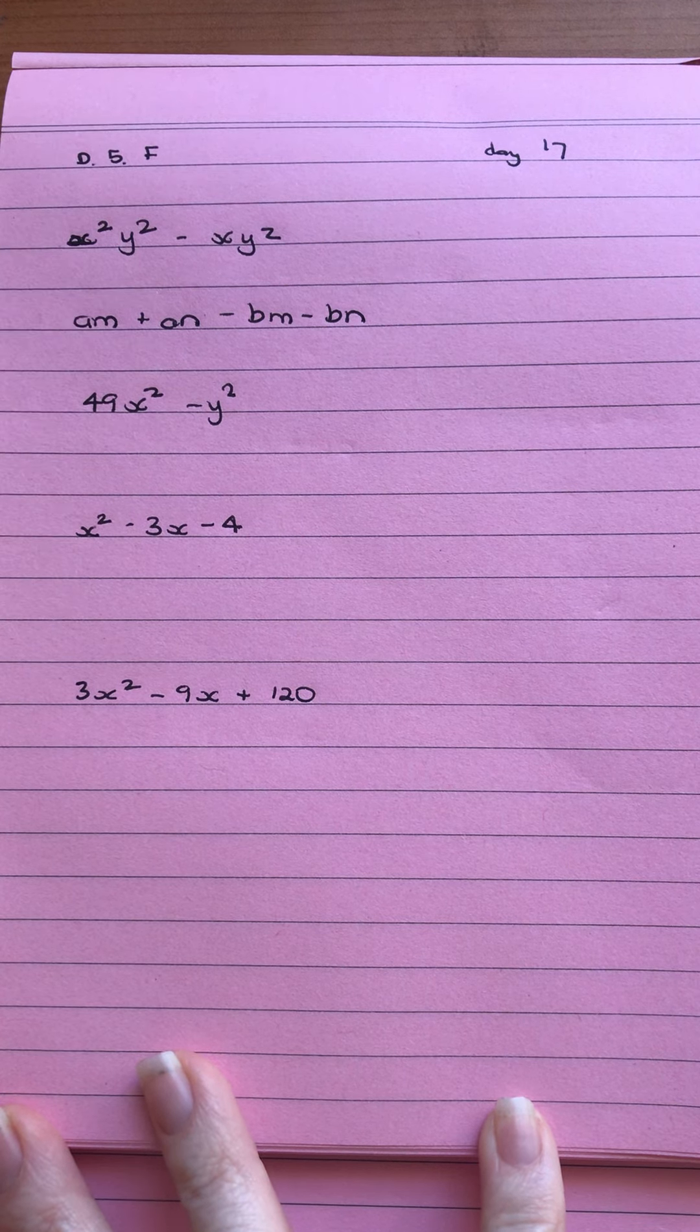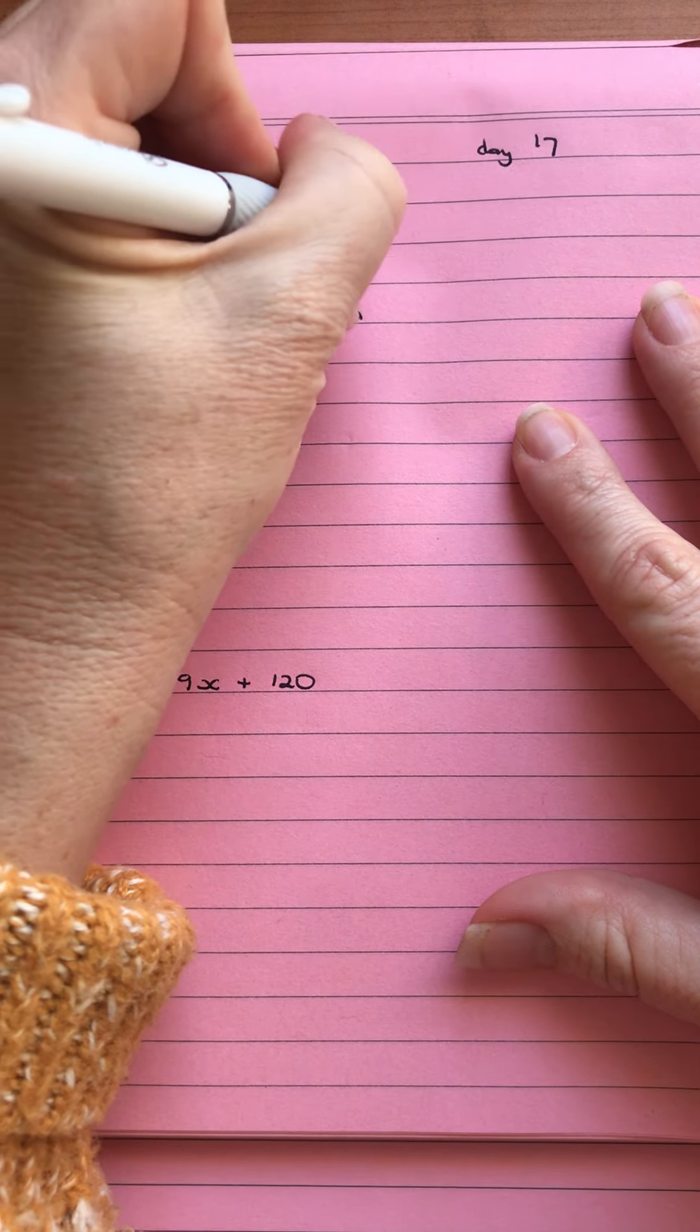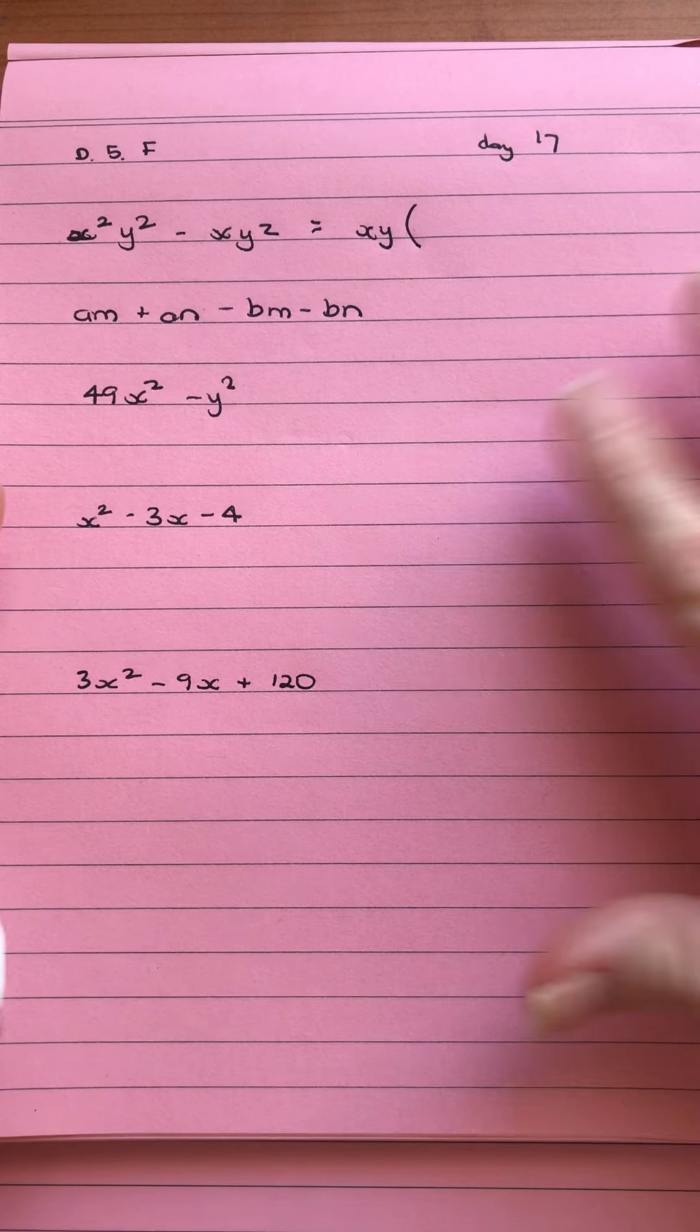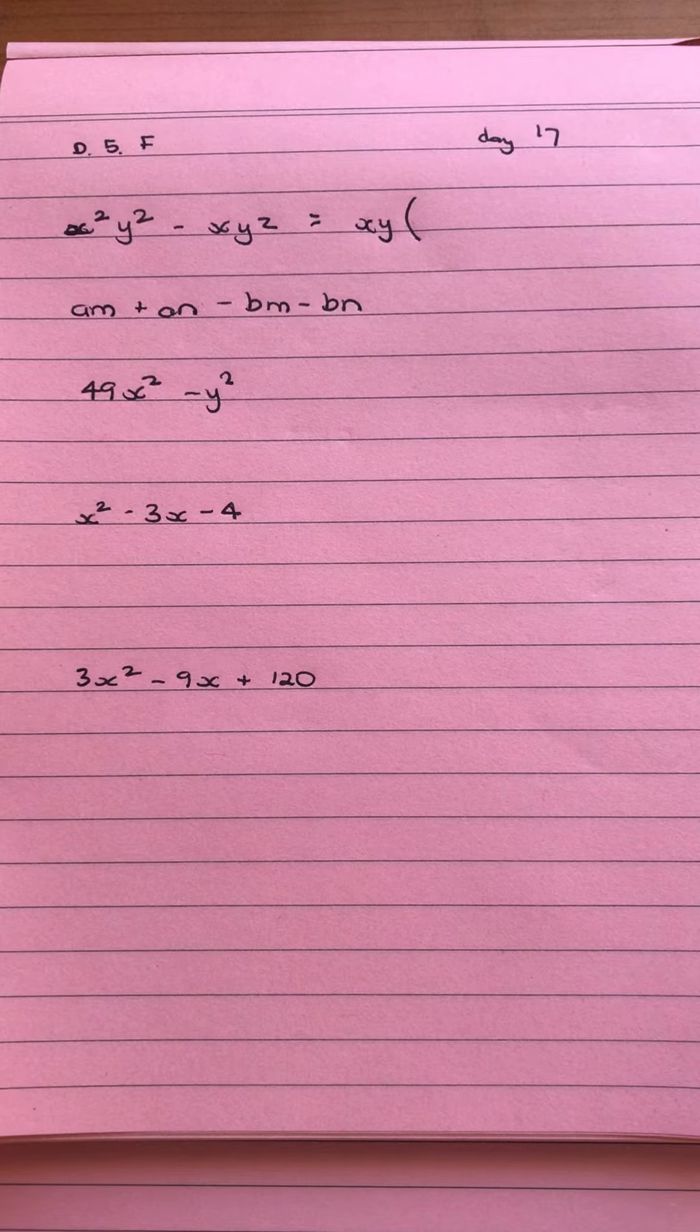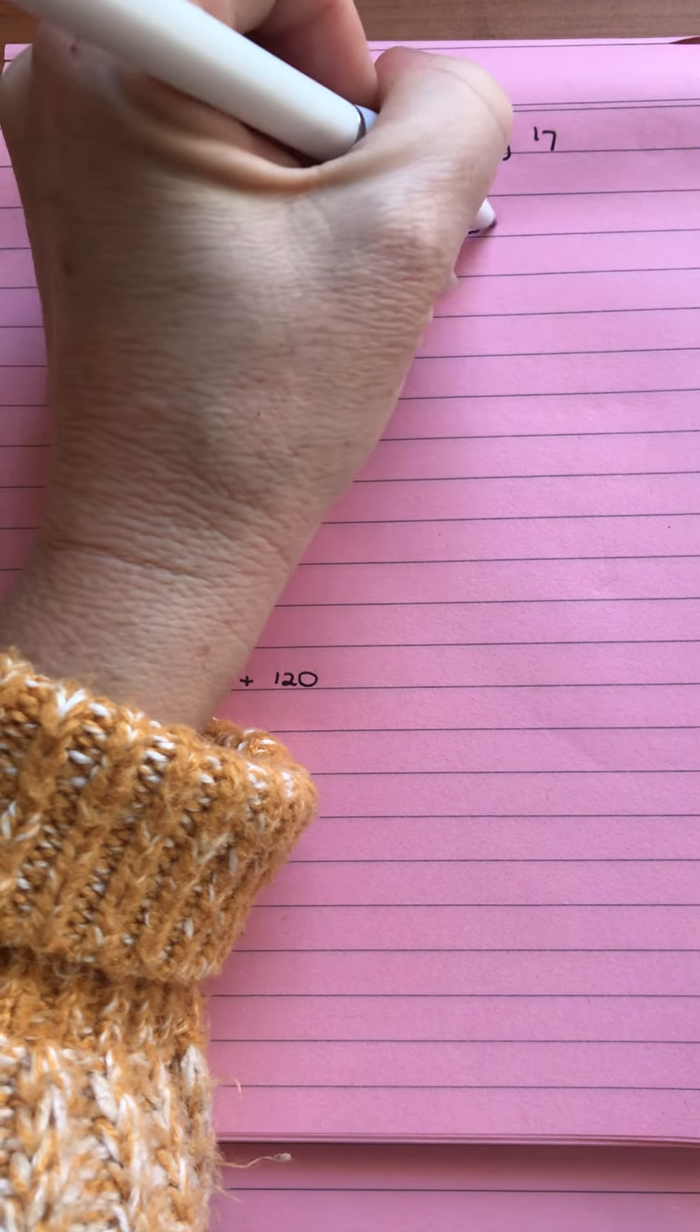So our first one, we're looking for a common factor. And we can see that it has a common factor of xy. So we'll put that outside the brackets, and then inside the brackets we'll go the x, y, and minus z.